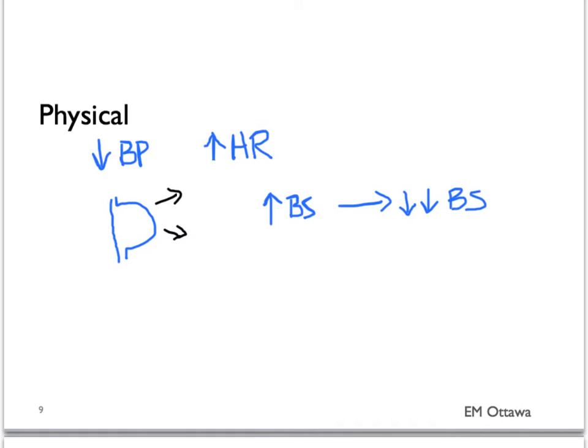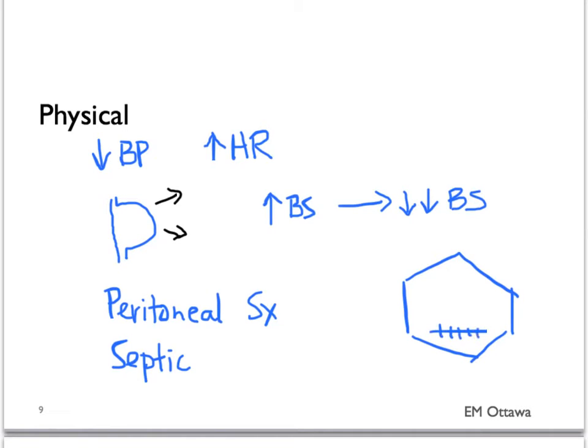If the bowel is perforated, there will be peritoneal signs. The patient can also look septic due to the perforation. Remember that adhesions are the main cause of bowel obstructions, and therefore, on physical examination, we would want to look for scars that suggest prior surgeries. We also want to look for hernias. In male patients, that includes the testicular exam.